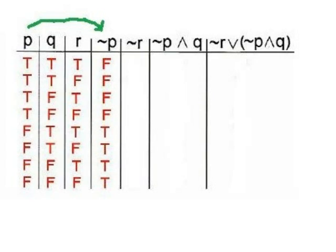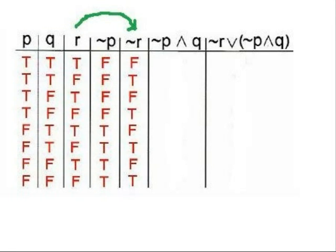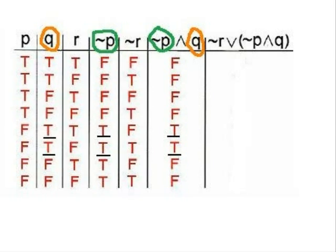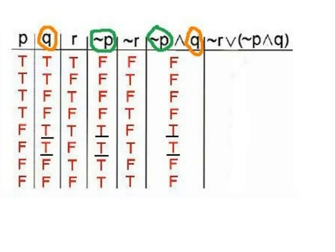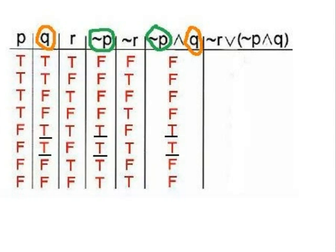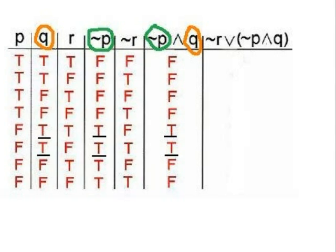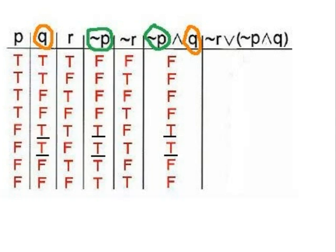Now we can complete the table. NOT P is just the opposite of P: 4 falses followed by 4 trues. NOT R is just the opposite of R: false, true, false, true, false, true, false, true. In the next column, we evaluate NOT P and Q using the AND rule — an AND statement is true only when both statements are true. Looking at the NOT P and Q columns, both are true in the 5th and 6th rows. Therefore, NOT P and Q is true only in the 5th and 6th rows and false everywhere else.